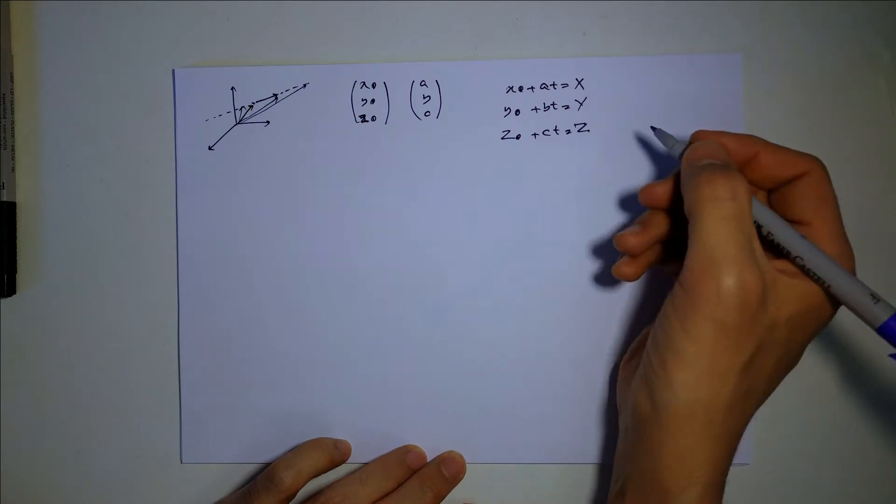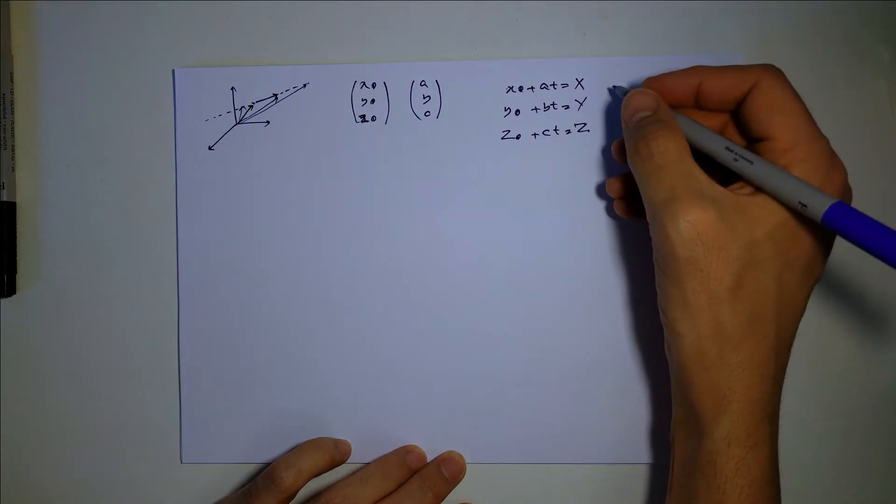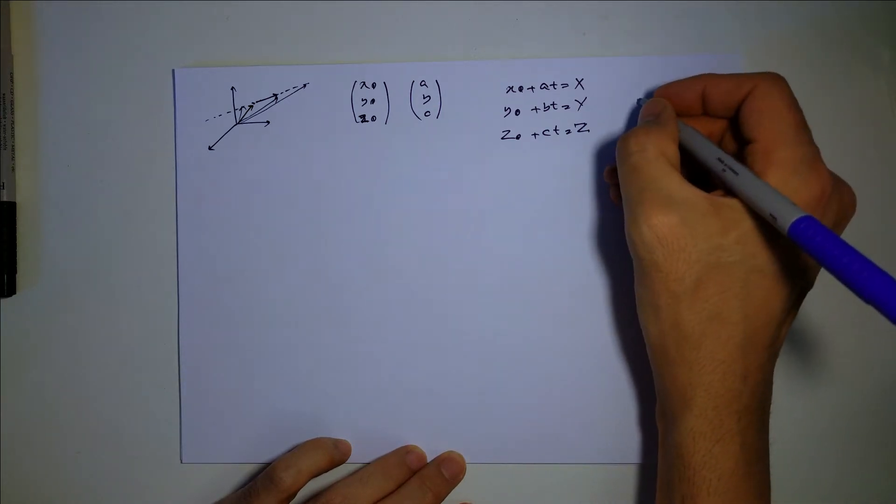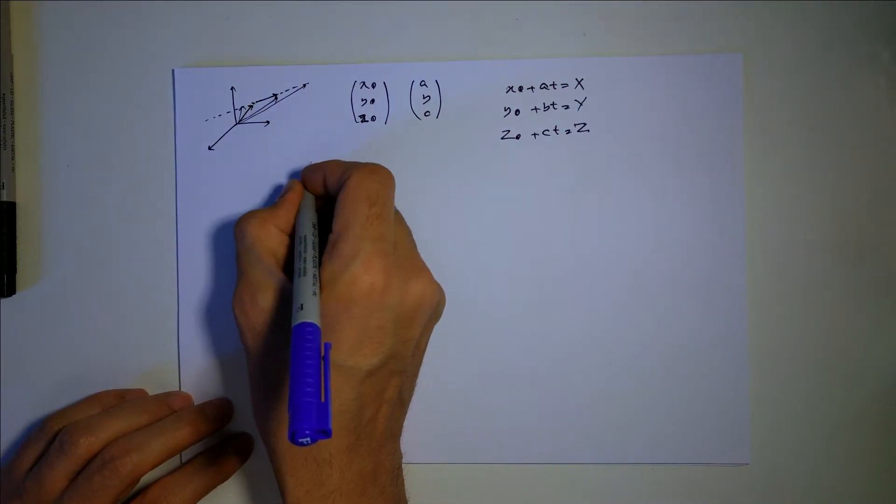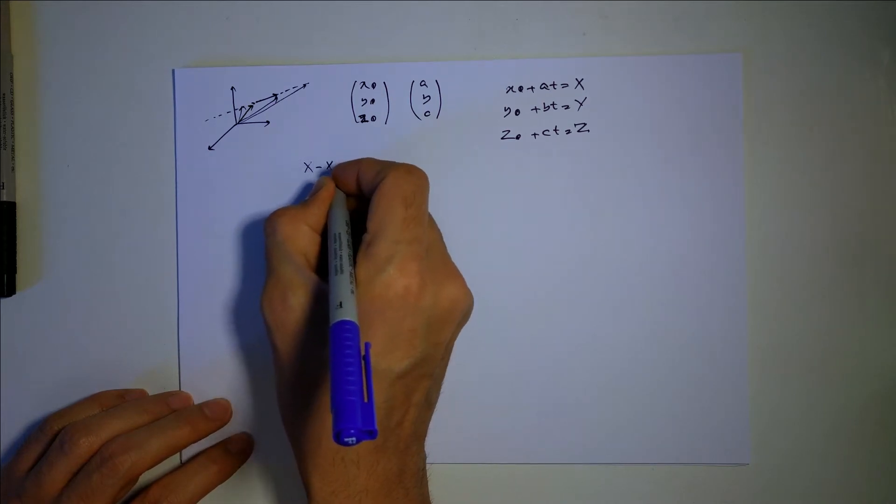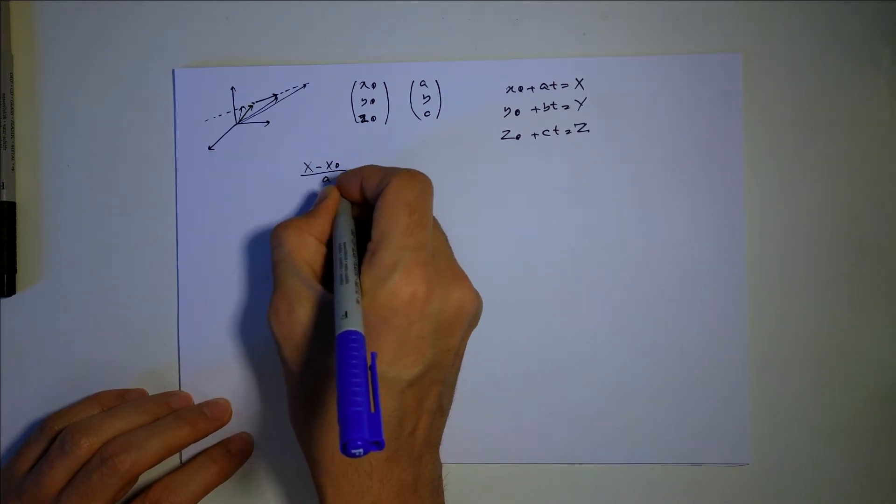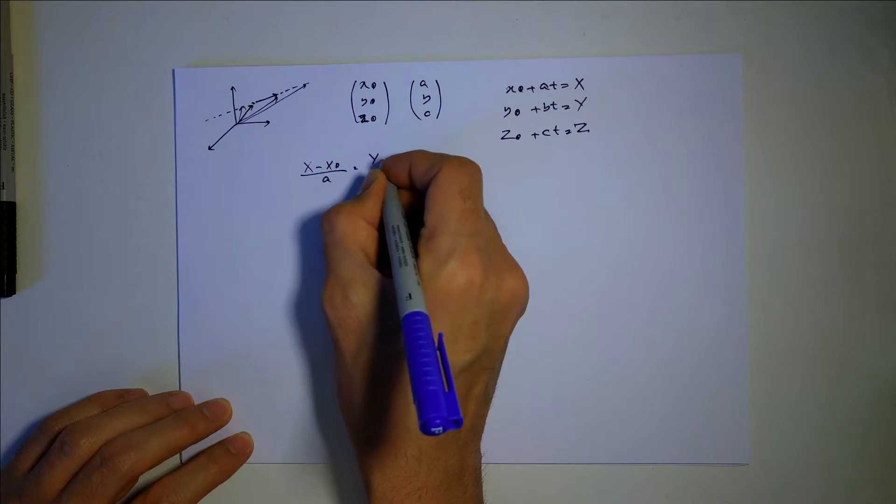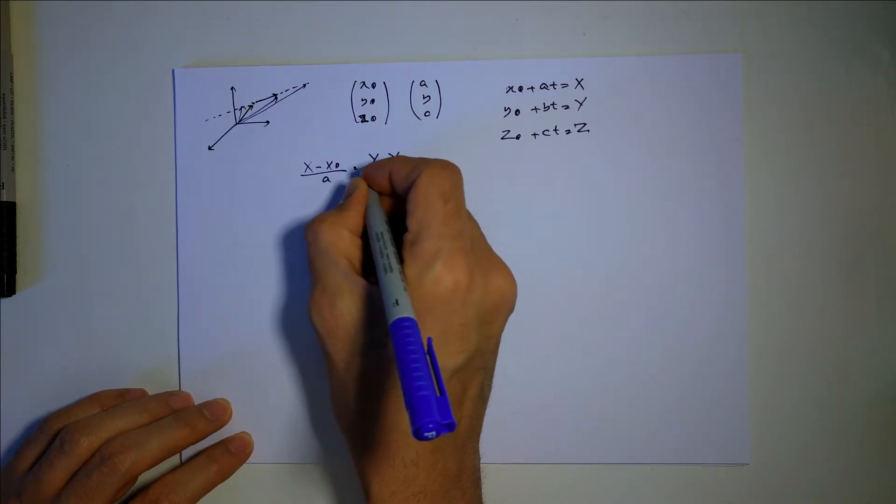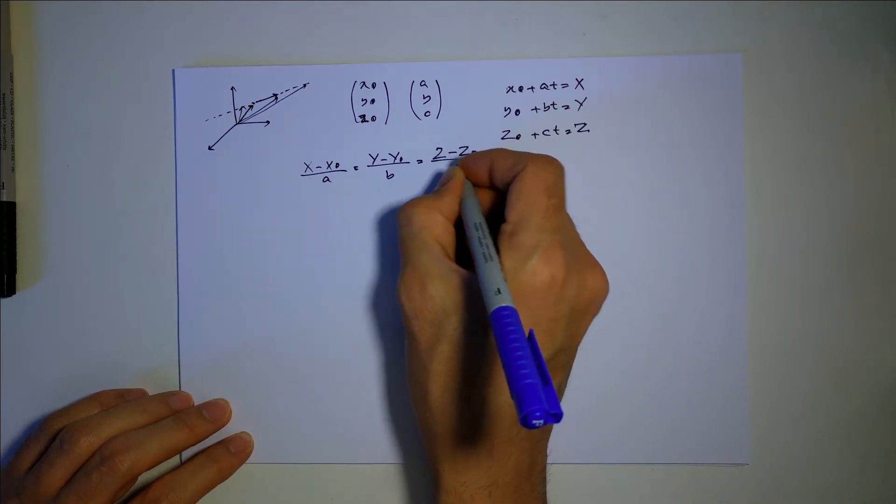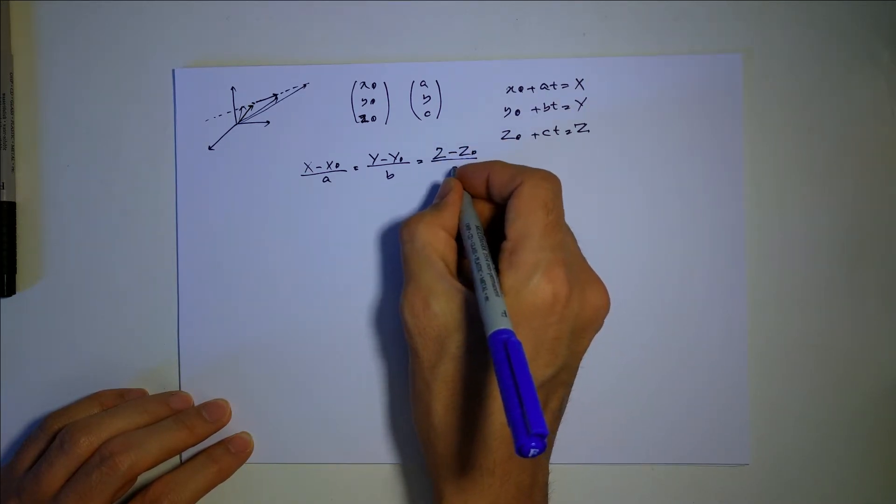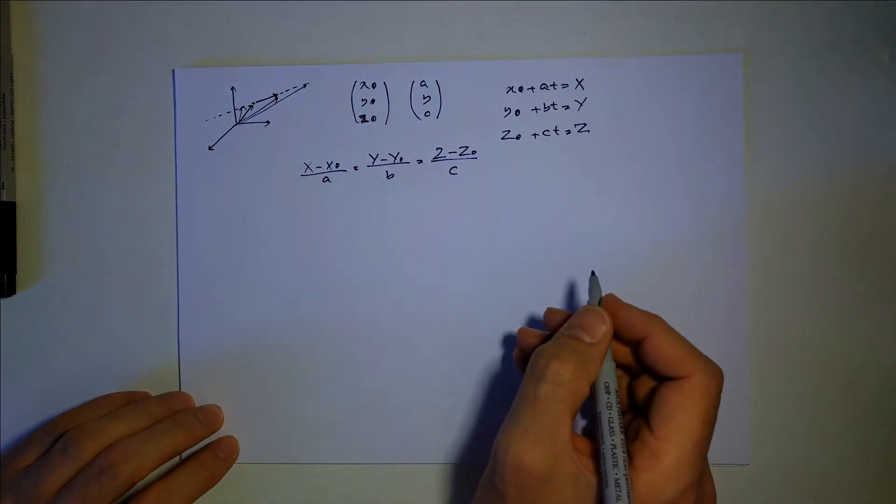So this is the equation of the line in 3D. Basically you can write it like this: because the t is the same value, you can write it like x minus x zero over a equals y minus y zero over b equals z minus z zero over c.